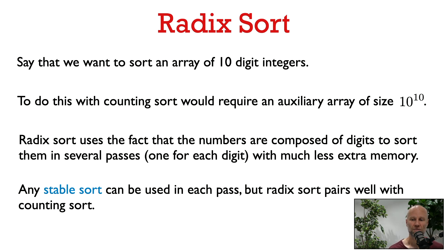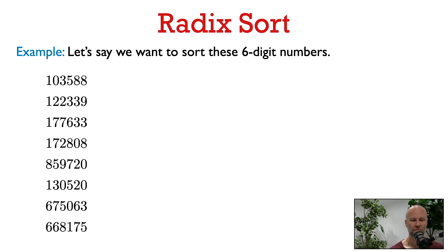Radix Sort gets around that problem by sorting numbers digit by digit. Again, you could use any stable sort to do that, but Counting Sort is a natural choice. So let's first look at an example of Radix Sort. Let's say that we want to sort these six-digit numbers.